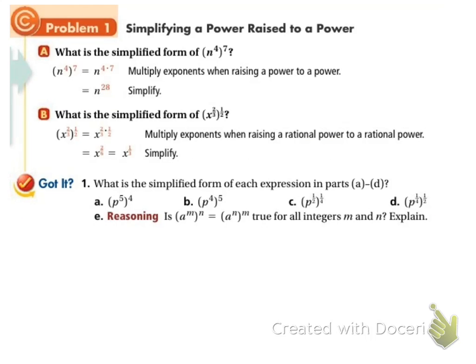So let's try some here. We'll try a, we've got p to the fifth to the fourth, so I need to do 5 times 4 and that's 20. So this is p to the twentieth. And if I try c, I've got p to the one half to the one fourth. So that's p to the one half times one fourth. Remember, multiply straight across the top, straight across the bottom, gives us one eighth. So this is p to the one eighth.